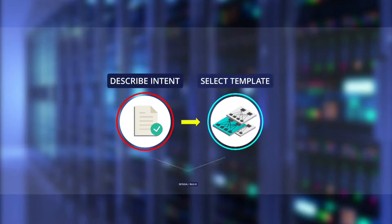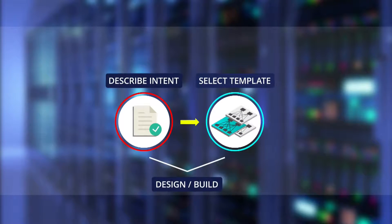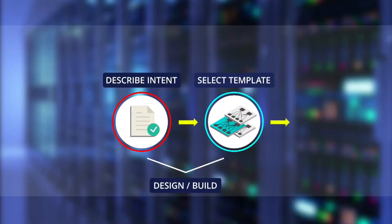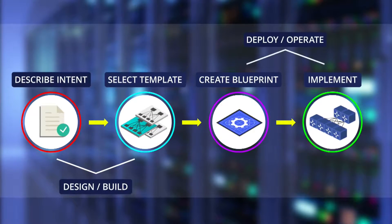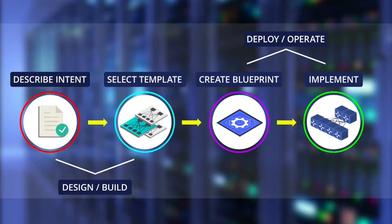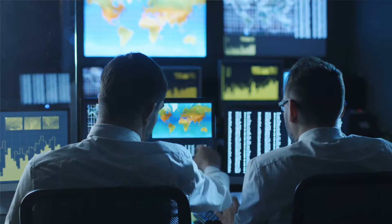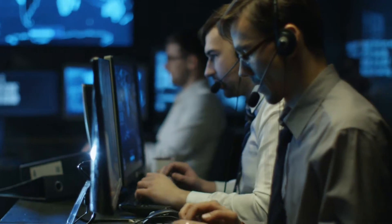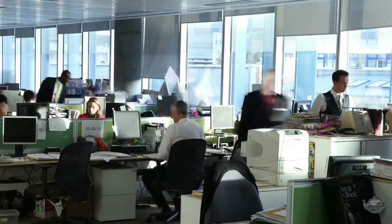AOS is a distributed operating system that achieves three major objectives. Number one: operational simplicity and agility through powerful intent-driven automation. Organizations are now able to deploy and extend their networks rapidly to deliver new business services. Number two: operational control.